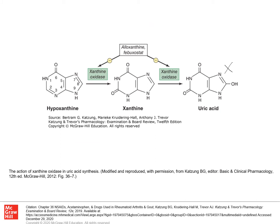When we look at the mechanism of action, both allopurinol and febuxostat inhibit the enzyme xanthine oxidase. When xanthine oxidase is inhibited, you don't have the conversion of hypoxanthine to xanthine, and then xanthine to uric acid. So if this is your bone joint — say in your toe — because you don't have uric acid being formed, you don't have these crystals getting deposited.